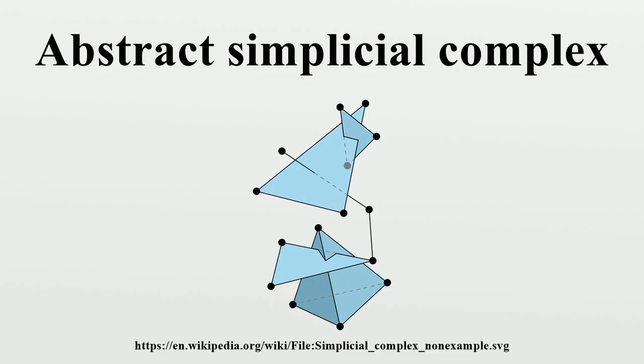Geometric realization: We can associate to an abstract simplicial complex K a topological space, called its geometric realization, which is a simplicial complex. The construction goes as follows.